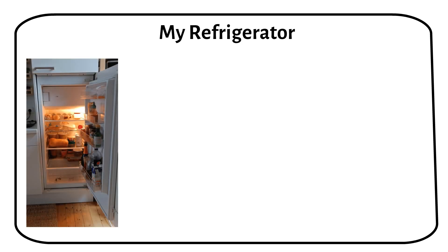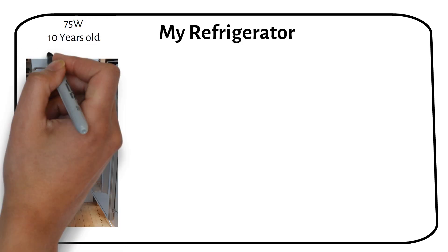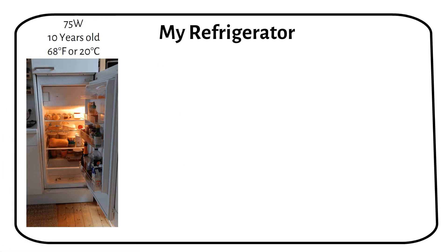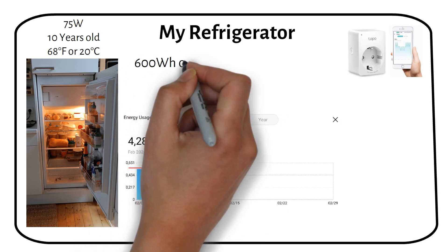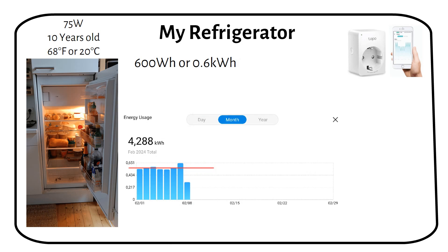In this example, we're focusing on the power consumption of a medium sized apartment fridge, equipped with a freezer section. The fridge is rated at 75 watts and is about 10 years old. To obtain accurate data, a power consumption monitor was employed for a week in an environment maintained at a steady 68 degrees Fahrenheit or 20 degrees Celsius. The results from the monitoring reveal that the fridge consumes approximately 600 watt hours, or 0.6 kilowatt hours daily. This figure represents the maximum daily energy usage observed during the analysis period of one week.